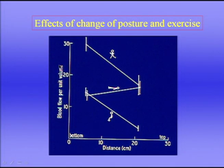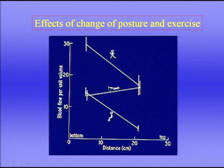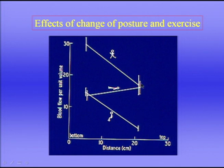The distribution of blood flow is affected by posture. In a seated subject, blood flow near the bottom of the lung greatly exceeds that near the top. If the subject then lies supine, blood flow becomes almost the same throughout the lung. On exercise in the upright position, both basal and apical blood flow increase, so blood flow becomes more uniform as fractional differences down the lung decrease.